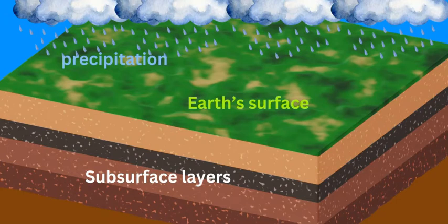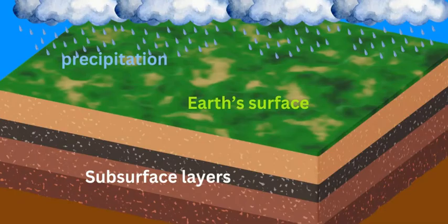For discussing groundwater we first have to set the scene of where this happens and occurs on the Earth, in the subsurface layers, the Earth's interior, the crust and lithosphere. Precipitation forms mostly as rain or meteoric rain, but also in various other forms based on temperature and levels of melting and freezing. Groundwater is going to reside and occur in this area of the Earth.